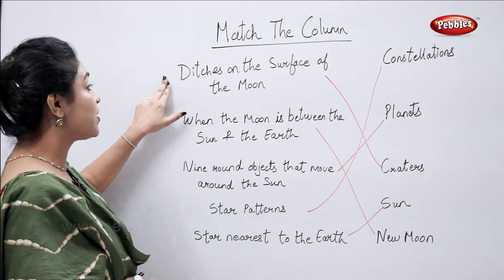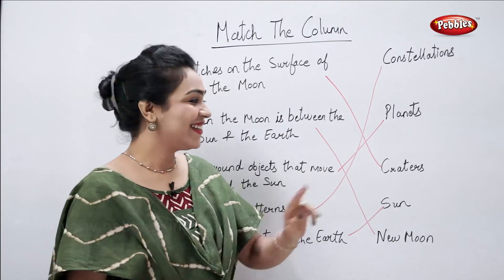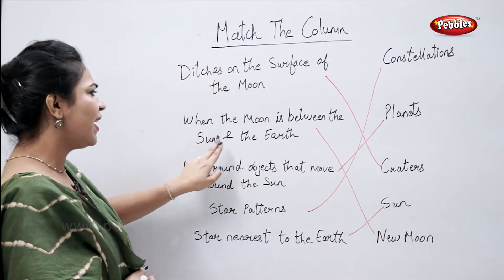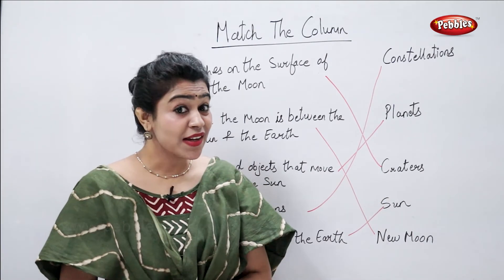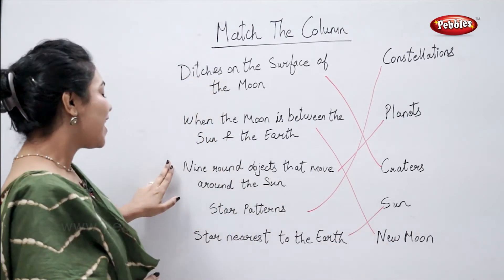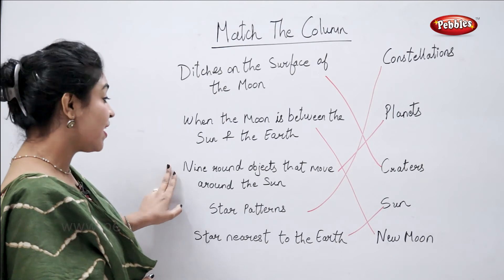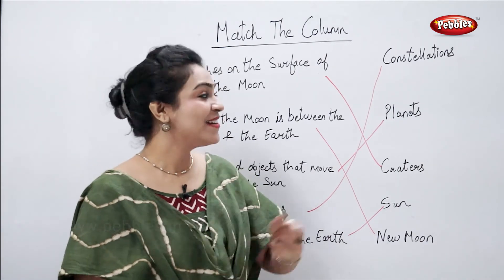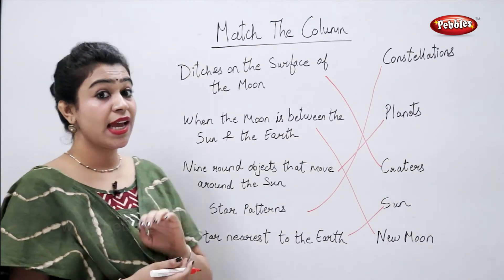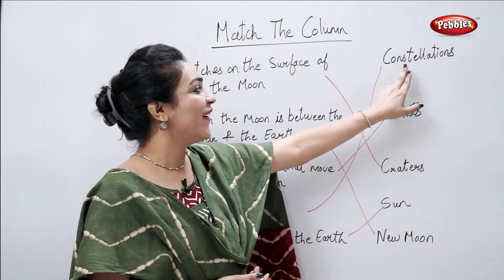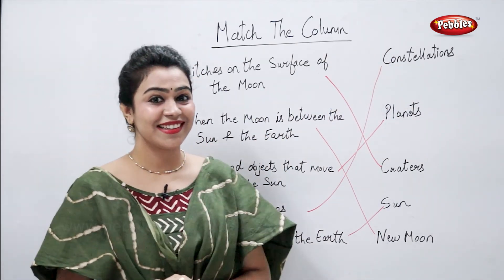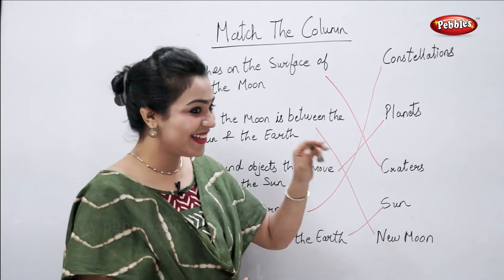Ditches on the surface of the moon are called craters. When the moon is between the sun and the earth, the night is called new moon night. Nine round objects that move around the sun are planets. Star patterns are called constellations. Star nearest to the earth is sun. Bye-bye, thank you.